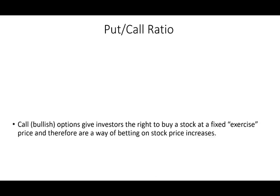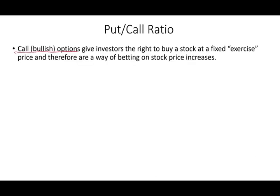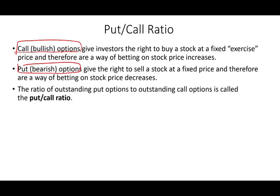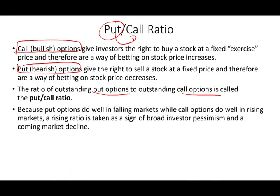The put/call ratio is very similar in interpretation to short interest. A call option gives the investor the right to buy the stock — you use calls when you are bullish. A put option gives you the right to sell the stock — that's when you are pessimistic and want to protect yourself. The ratio is outstanding put options divided by outstanding call options, often measured on the S&P 500 to reflect the whole market. A ratio greater than one means bearish — more puts than calls.